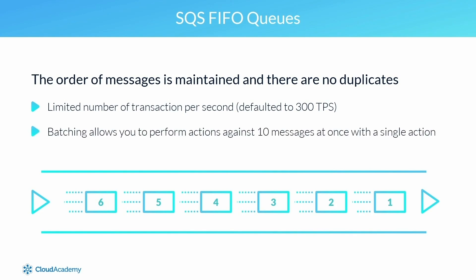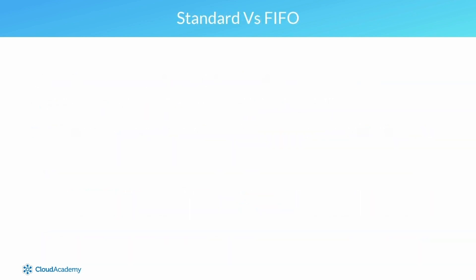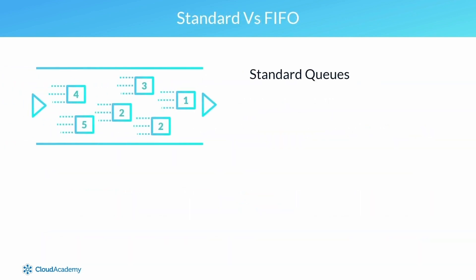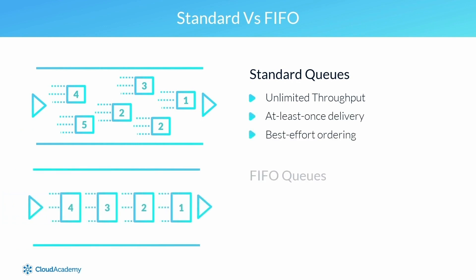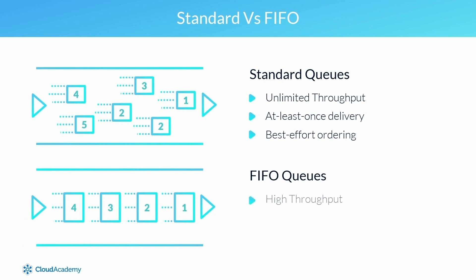Batching essentially allows you to perform actions against 10 messages at once within a single action. The key takeaways between the two queue types are: for standard queues, you have unlimited throughput, at-least-once delivery, and best-effort ordering; and for FIFO queues, you have high throughput, first-in-first-out delivery, and exactly-once processing. For both queues, it is also possible to enable encryption using server-side encryption via KMS.